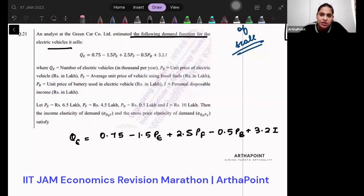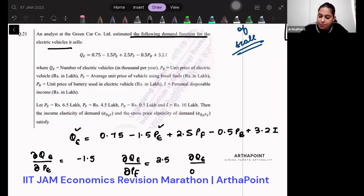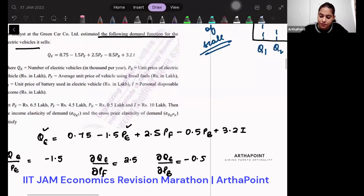So let us go ahead and find what will be del QE by del PE. If you differentiate this with respect to PE, you will just get minus 1.5. Del QE by del PF, you will get 2.5. Del QE by del PB, you will get minus 0.5. Del QE by del I, you will get 3.5.